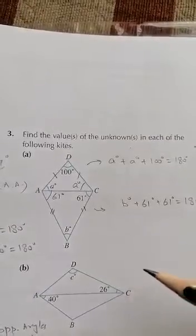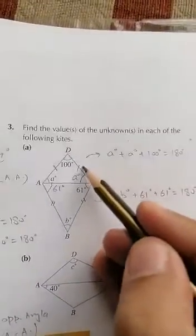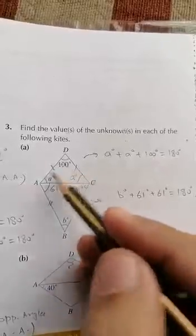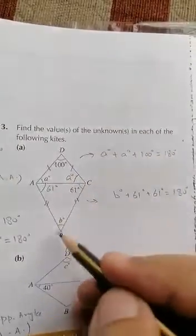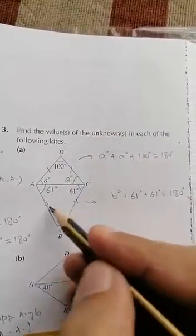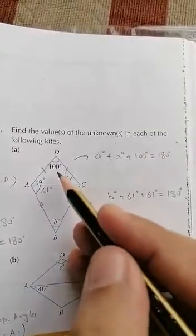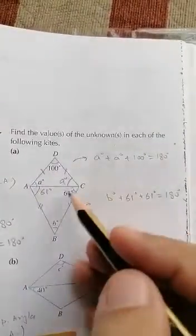We know that a kite has two pairs of equal adjacent sides. This side and this side are equal in length, whereas these two sides are equal in length. In this way, triangle ADC is an isosceles triangle.